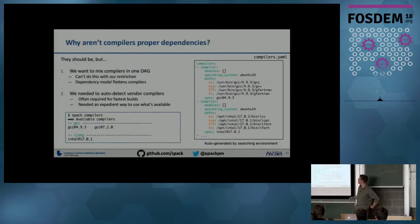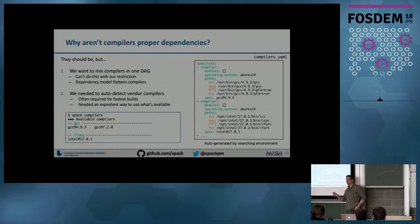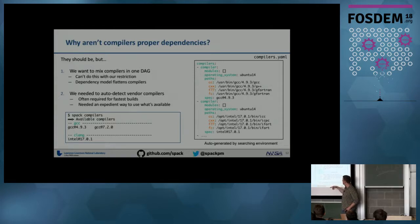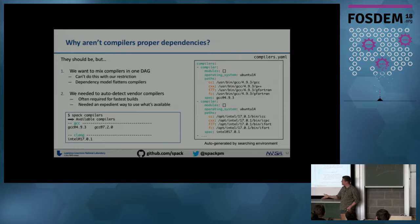So why aren't compilers proper dependencies in SPAC right now? It's mostly for expedience. We wanted to mix compilers in one DAG to experiment with lots of different compiler types, and we can't do that with our one-instance-per-package restriction. What SPAC does instead is search your environment for all compilers and set up a config file — listing C, C++, Fortran compilers, the OS, modules if you can load from one. It uses this as the description of the compiler, and a spec identifier gets put on the DAG.